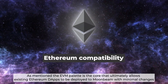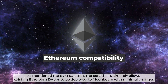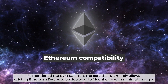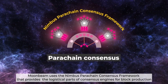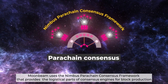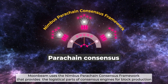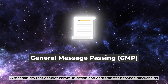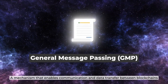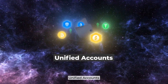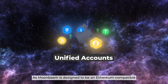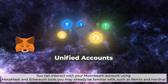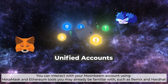Ethereum compatibility: the EVM pallet is the core that ultimately allows existing Ethereum DApps to be deployed to Moonbeam with minimal changes. Moonbeam uses the Nimbus parachain consensus framework that provides the logistical parts of consensus engines for block production, and general message passing — a mechanism that enables communication and data transfer between blockchains. As Moonbeam is designed to be Ethereum-compatible, you can interact with your Moonbeam account using MetaMask and Ethereum tools you may already be familiar with, such as Remix and Hardhat.